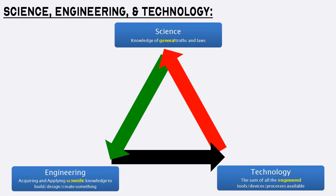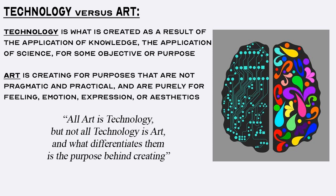The word mathematics literally means thought technology, or technology for learning. It is also important here to compare and contrast technology and art. Technology and art are associated in English with the word craft. Technology is what is created as a result of the application of knowledge — the application of science — for some objective or purpose. When the purpose and objective of creating exists outside of the pragmatic and practical, and is purely for feeling, emotion, expression, or aesthetics, then it is called art.